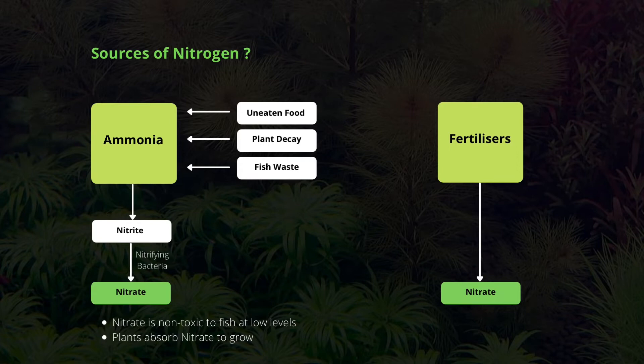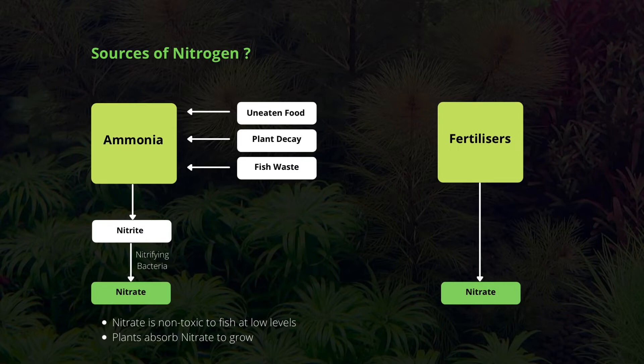The other way to provide nitrogen in your tank is to use off-the-shelf fertilizers. If your tank is really clean and not much decay is happening, your nitrogen levels will be pretty low. You can use off-the-shelf fertilizers to supply nitrogen and provide that food to your aquarium plants.